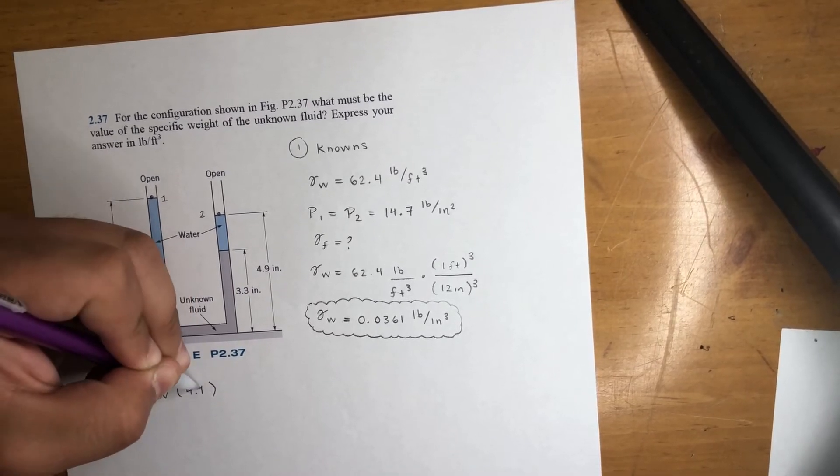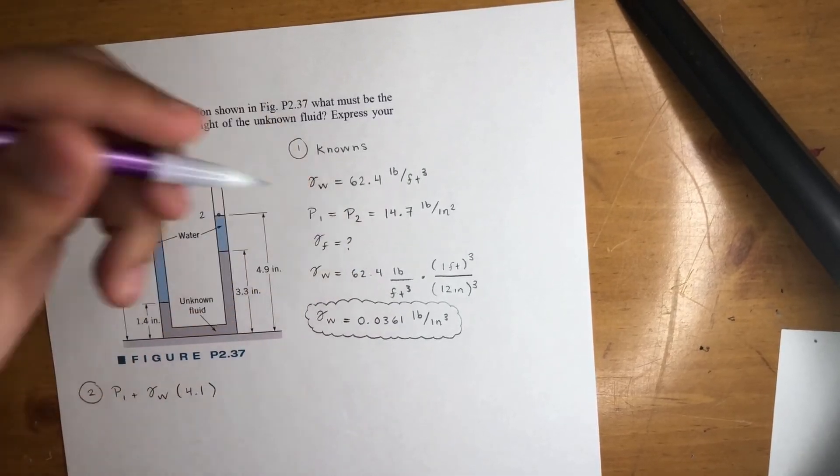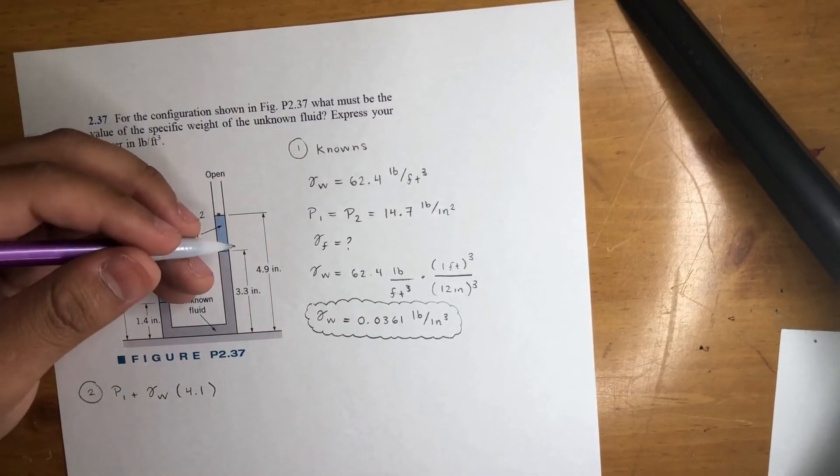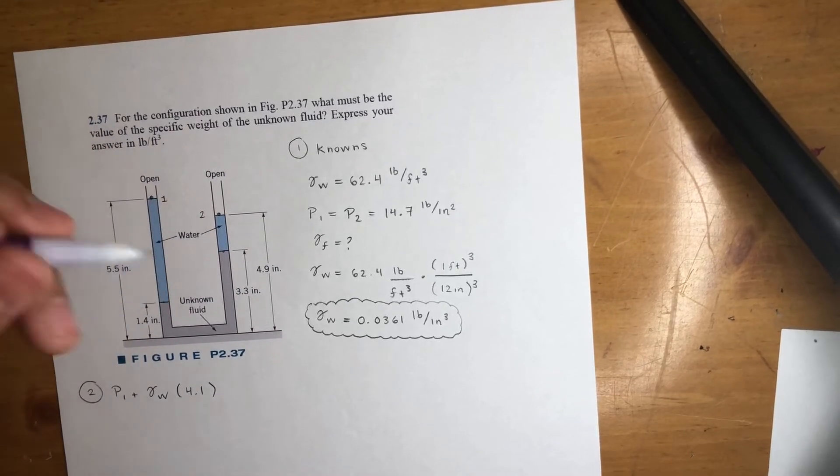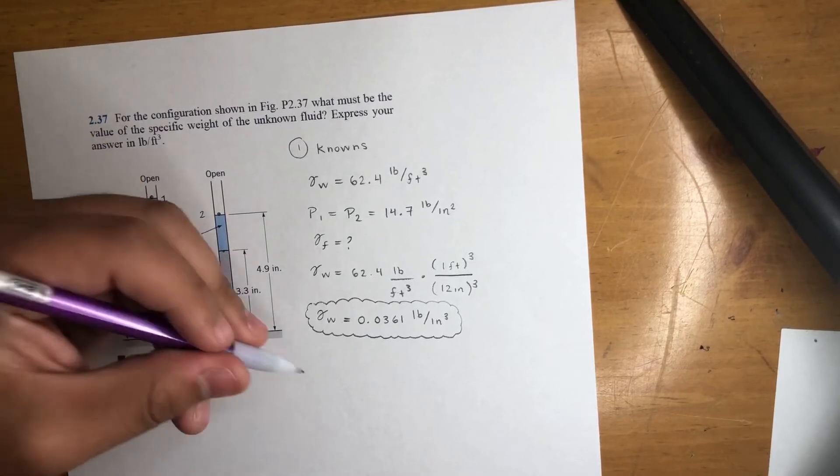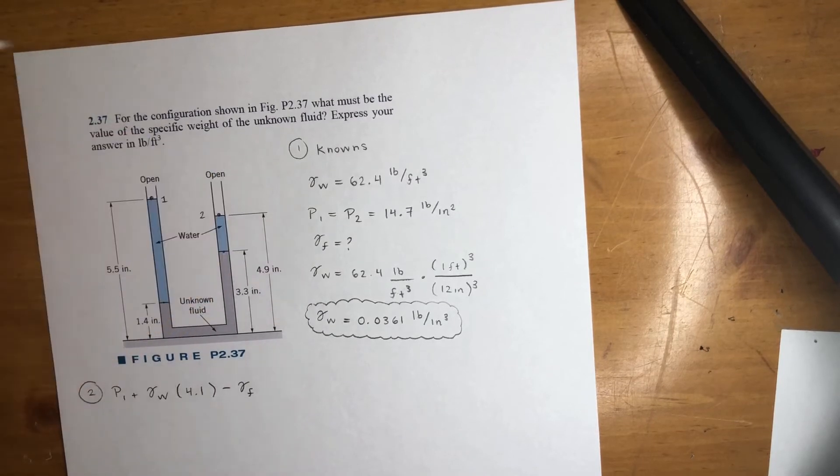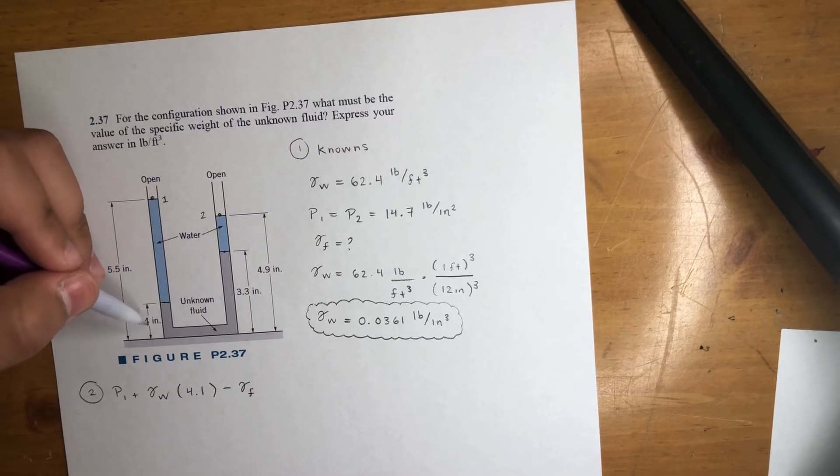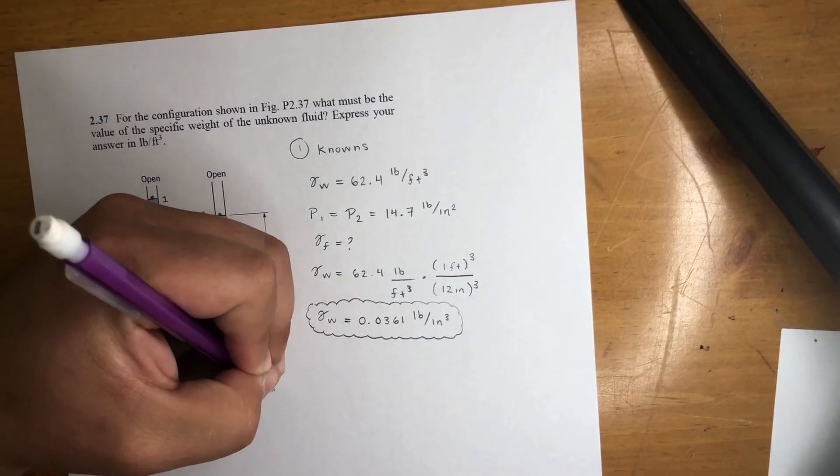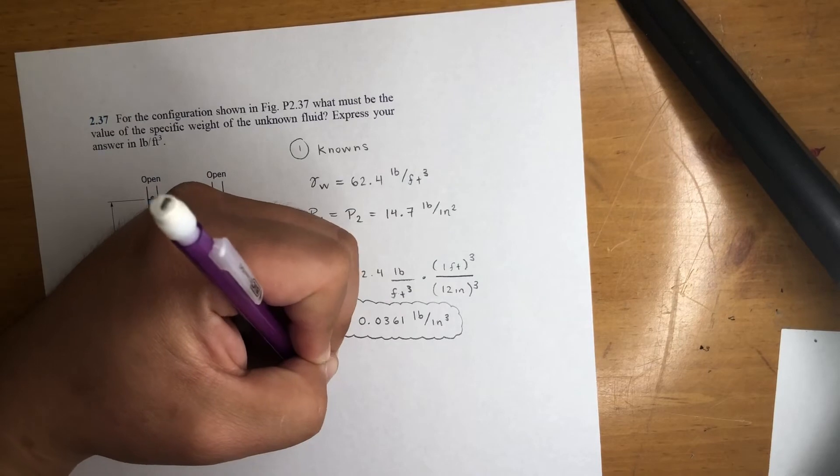And again, this is inches, this is pounds per inch cubed. Multiply it, you'll get pounds per inch squared—that's a pressure unit. So cool, we're at this point now. Now we go from here to here, we're going up. That's the case, so it's going to be a negative gamma f—that's what we're looking for—times the height. So it's 3.3 minus 1.4, that is 1.9. Now from this point to this point we're dealing with water, we're going up, so that's a negative.